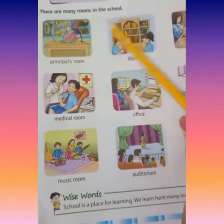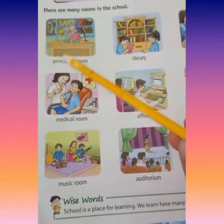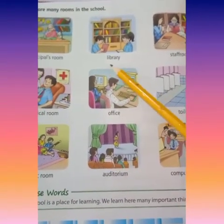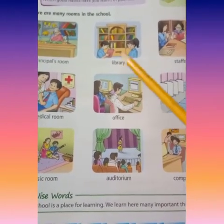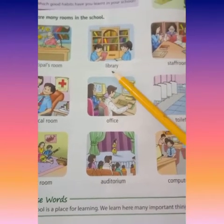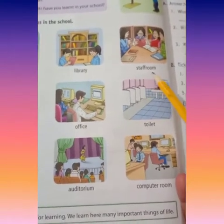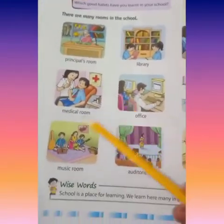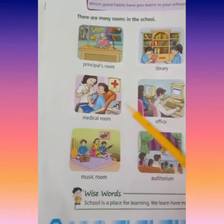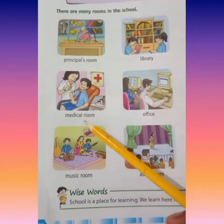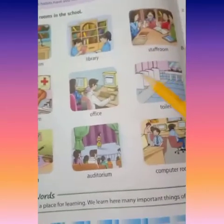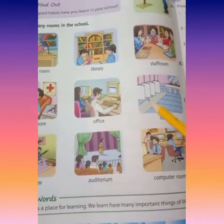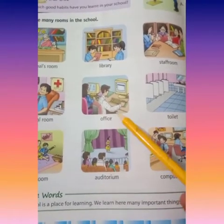There are many rooms in the school - school meh bhoot saray room hote hain. This is the principal room where the principal sits. Library - there are many books kept there; students go there and read books. Staff room where all teachers sit. Medical room - when students are hurt, we take them to the medical room. Office - jaha peh computer work hote hain, result repair kia jate hain, fees bhari jate hain.